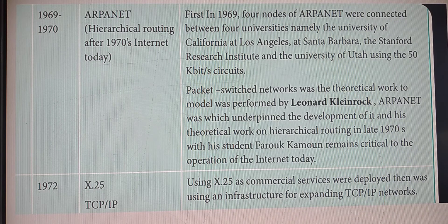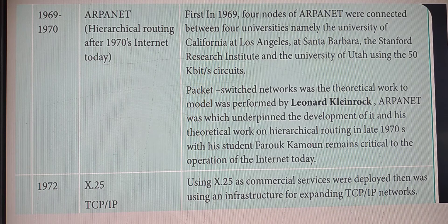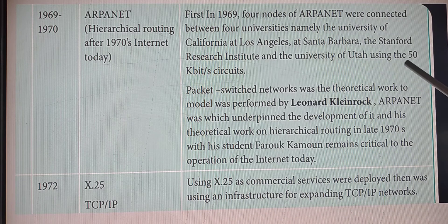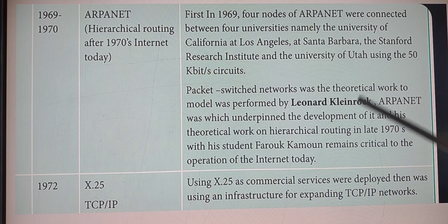From 1969 to 1970, ARPANET was introduced using the concept of hierarchical routing. Four universities were connected by means of this ARPANET concept: University of California, University of California Santa Barbara, Stanford Research Institute, and University of Utah. They used a speed of 50 kilobits circuits to test whether the ARPANET concept was working correctly.